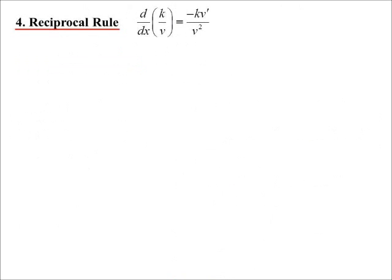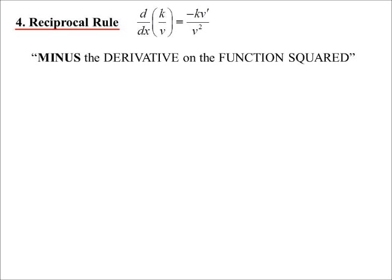Now, I'm going to let you in on a little secret. The reciprocal rule. You won't find this in textbooks. It's when you've got a constant on the top of the fraction. Constant on the top of the fraction. That just saves you a little bit of time. We don't have to put it back in index form. We can simply go minus the derivative on the function squared.